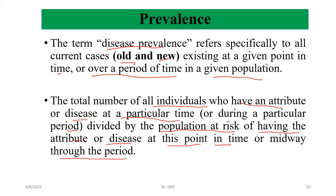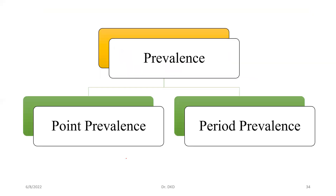Prevalence is of two types. The first one is known as point prevalence and the second one is period prevalence. In the upcoming slides, we will discuss what is point prevalence and what is period prevalence.